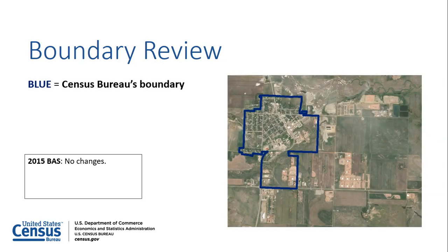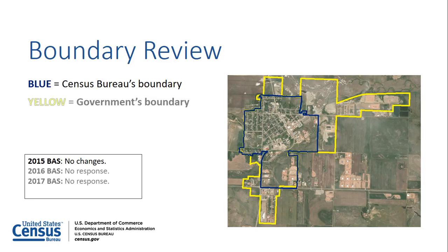This is an example that highlights the importance of reviewing the Census Bureau's current boundary data prior to completing the Annual Response Form. On the map, the blue line represents the boundary that the Census Bureau had on file for this government as of the 2015 BAS. In 2016 and 2017, the government annexed a significant amount of land but did not respond to the 2016 or 2017 BAS. As a result, these annexations were not added to the Census Bureau's database and the boundary data on file remained unchanged.